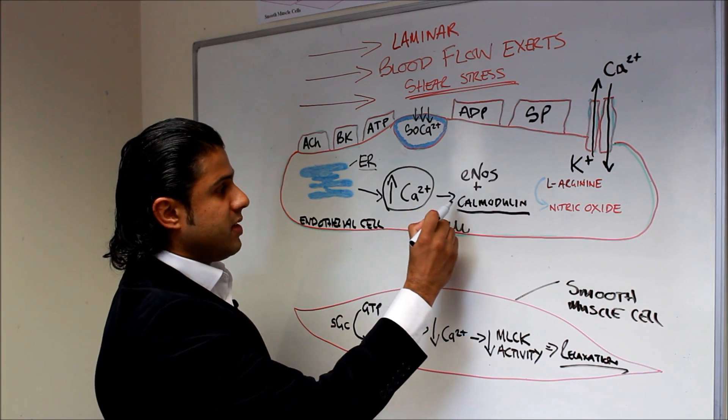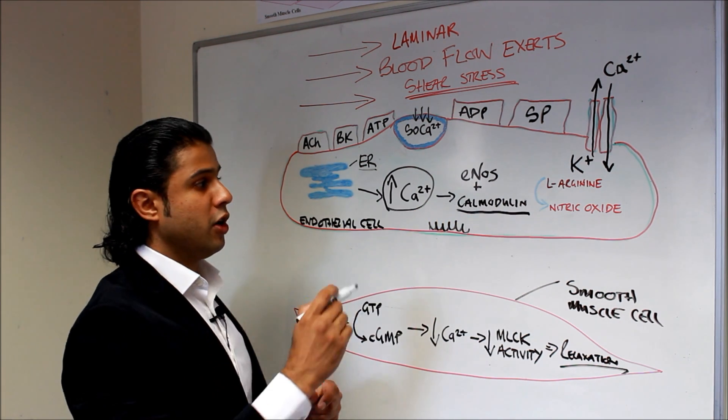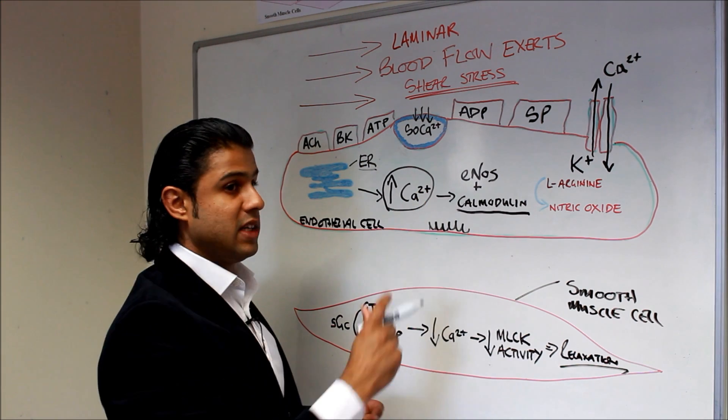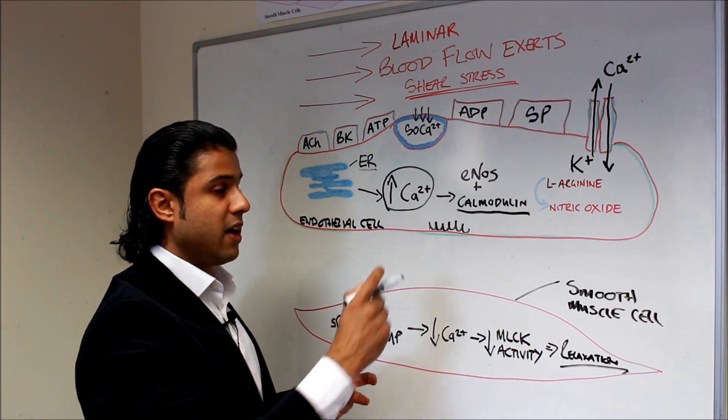So by increasing the calcium levels and changing the conformational shape of calmodulin, you start to get ENOS detaching. The calcium causes the ENOS to detach from the caveolin, attach to the calmodulin,